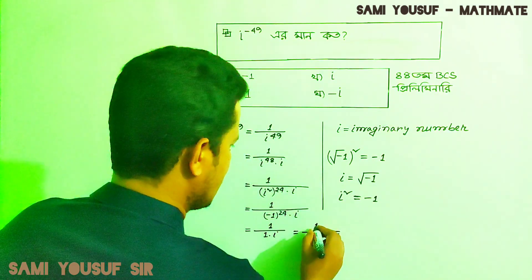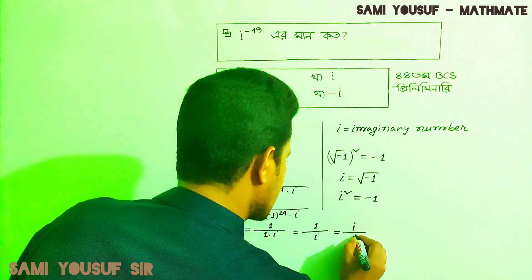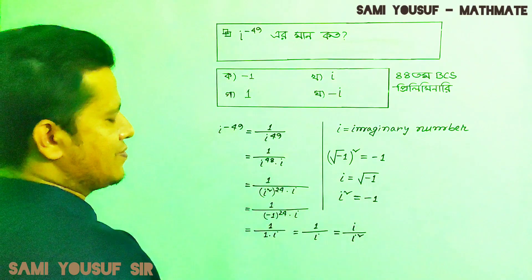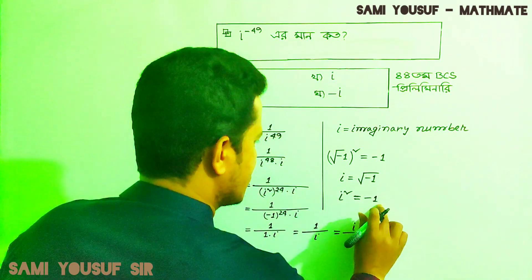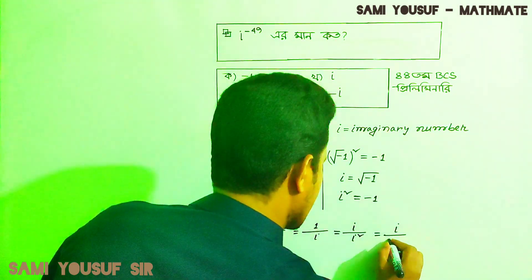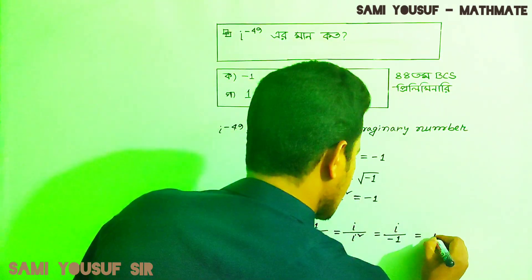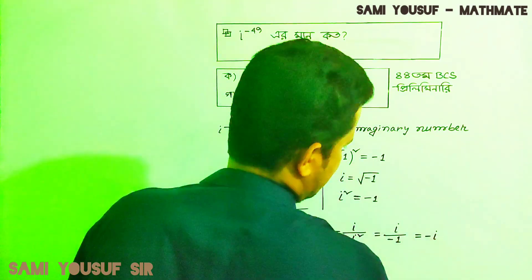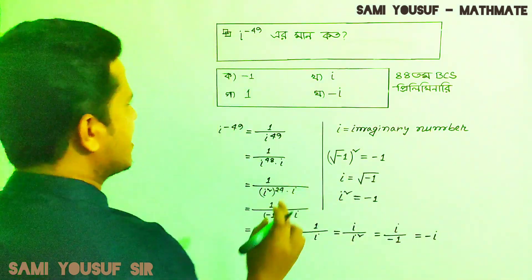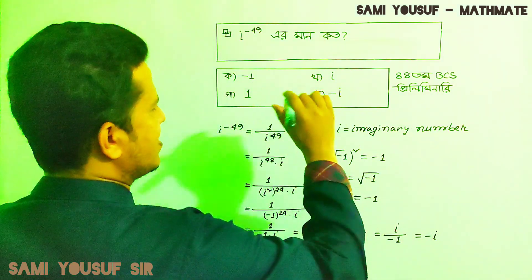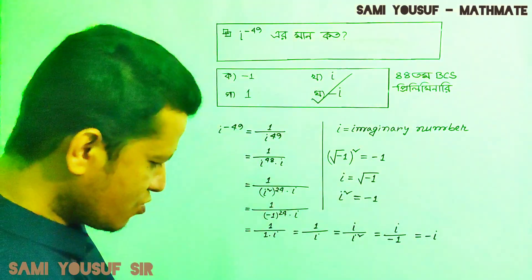We can now compute 1 by i. Since i squared equals minus 1, multiplying through gives i times minus 1 divided by i squared, which simplifies. The whole calculation gives minus i, so the answer is minus i.